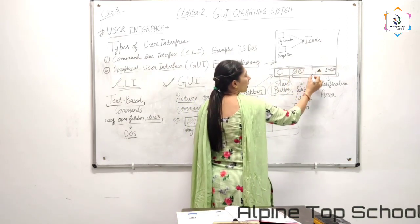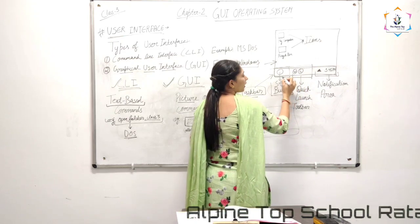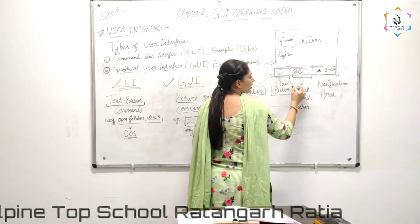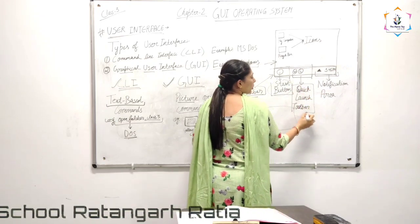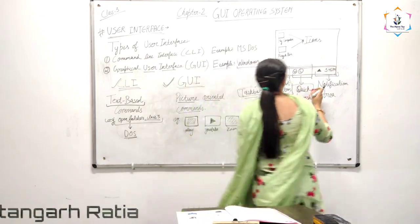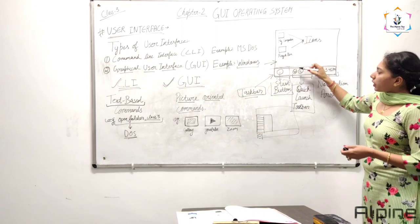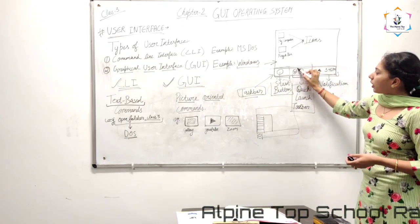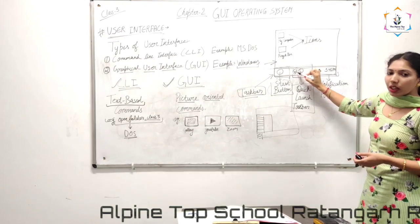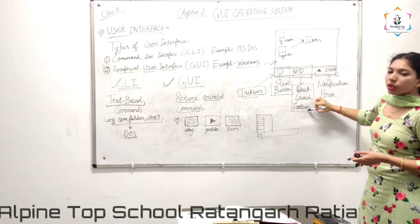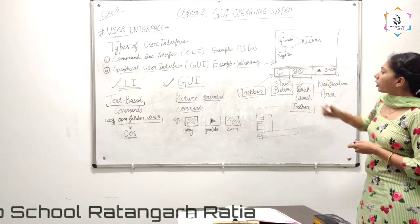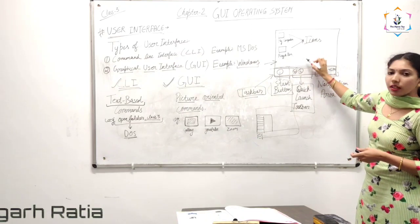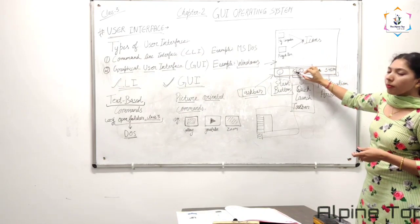Next section, in the center between the Start button and the notification area, is the Quick Launch Toolbar. What is Quick Launch Toolbar? Whichever application you have opened, that small icon will appear here in the Quick Launch Toolbar. You can minimize and maximize that program from here.